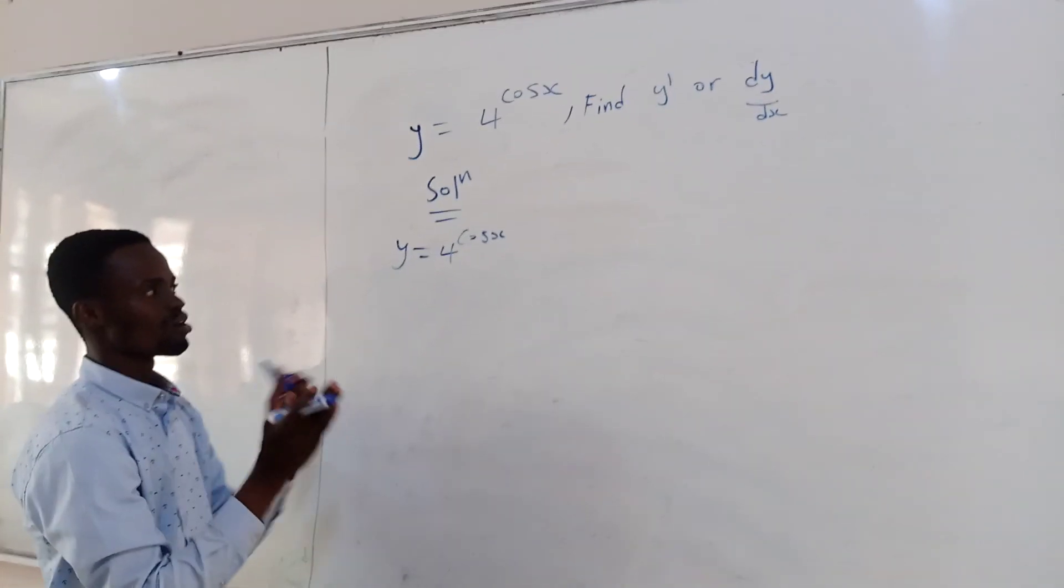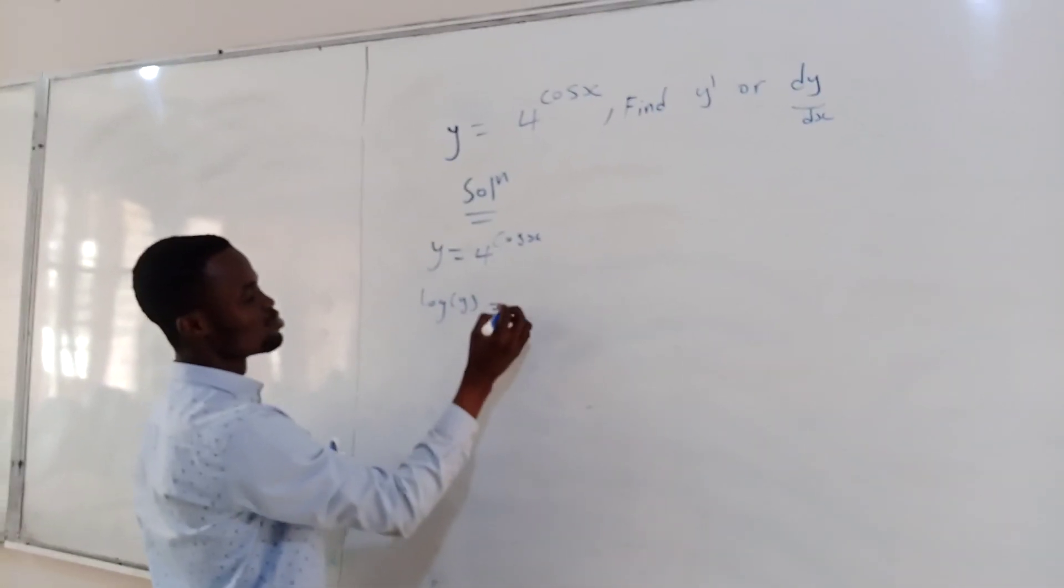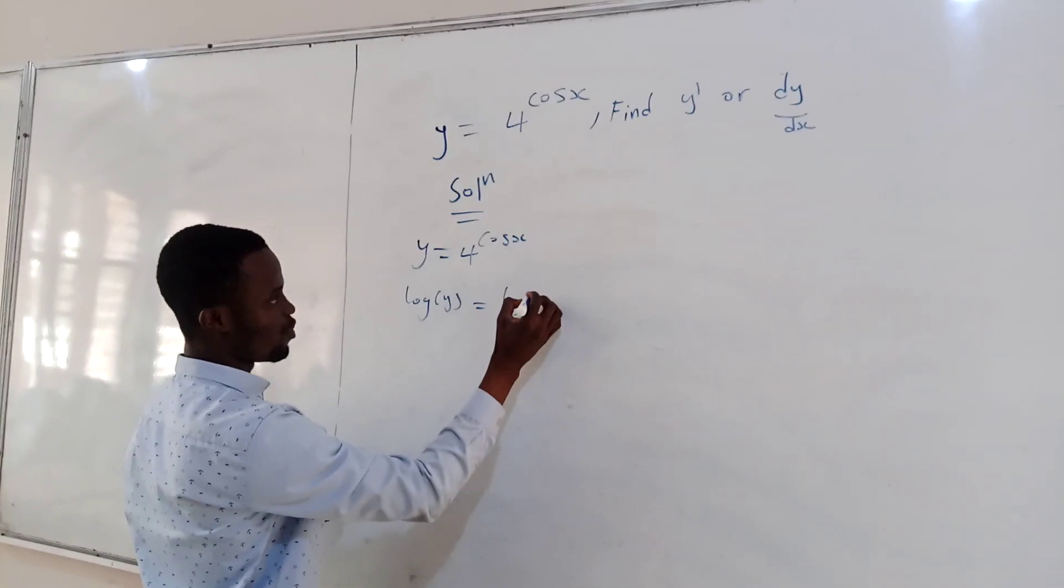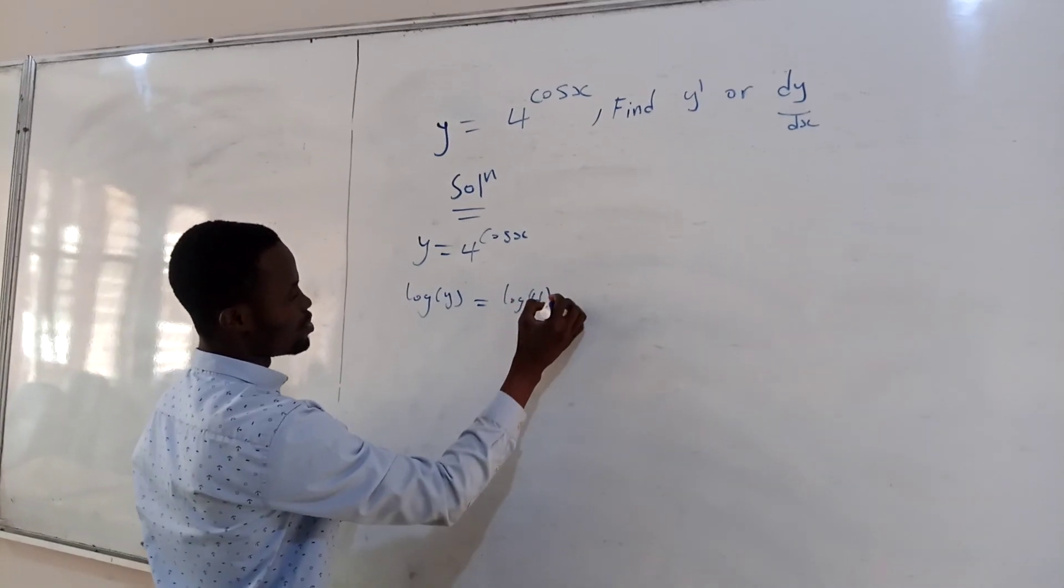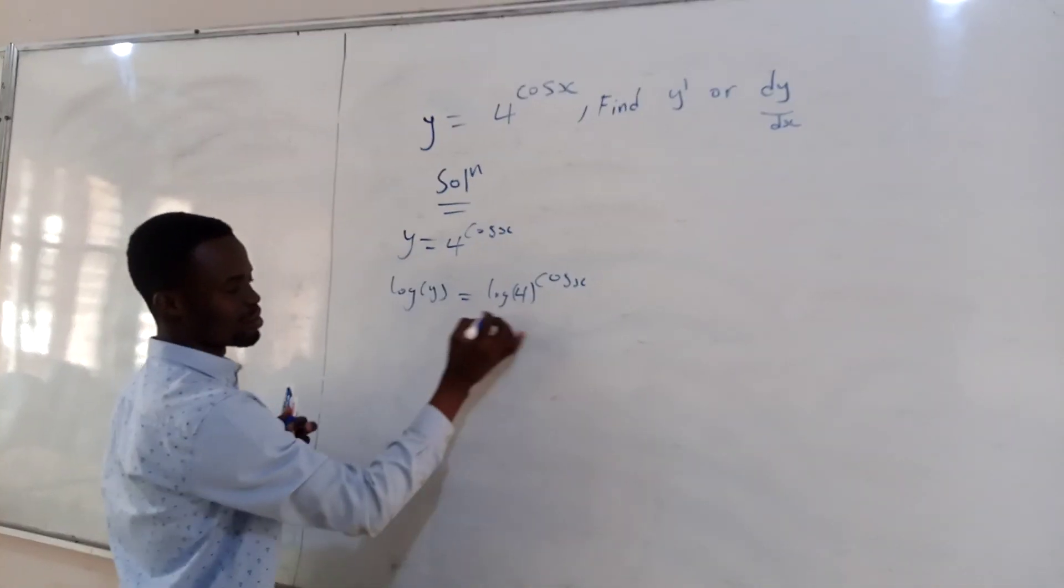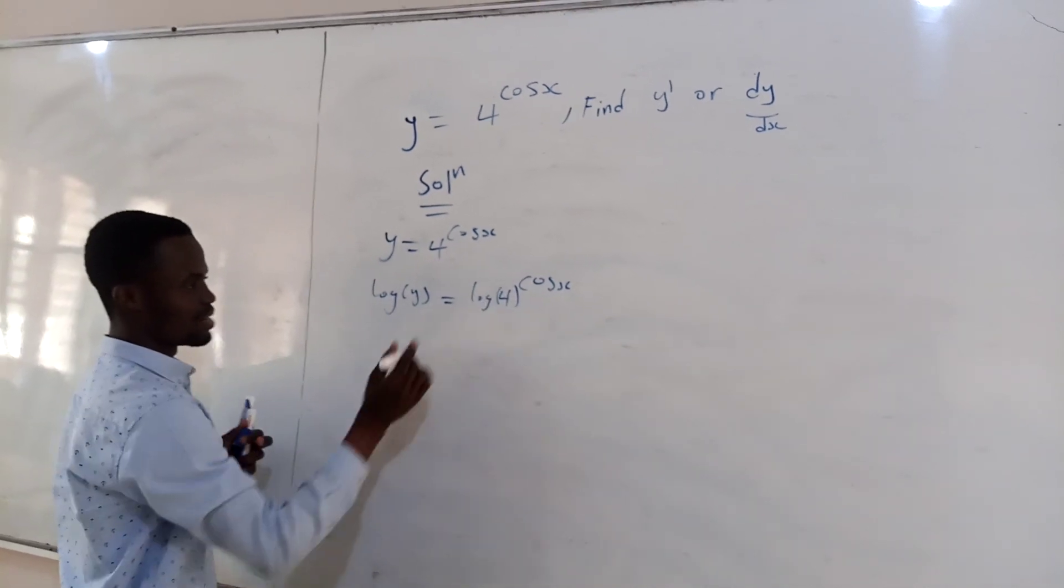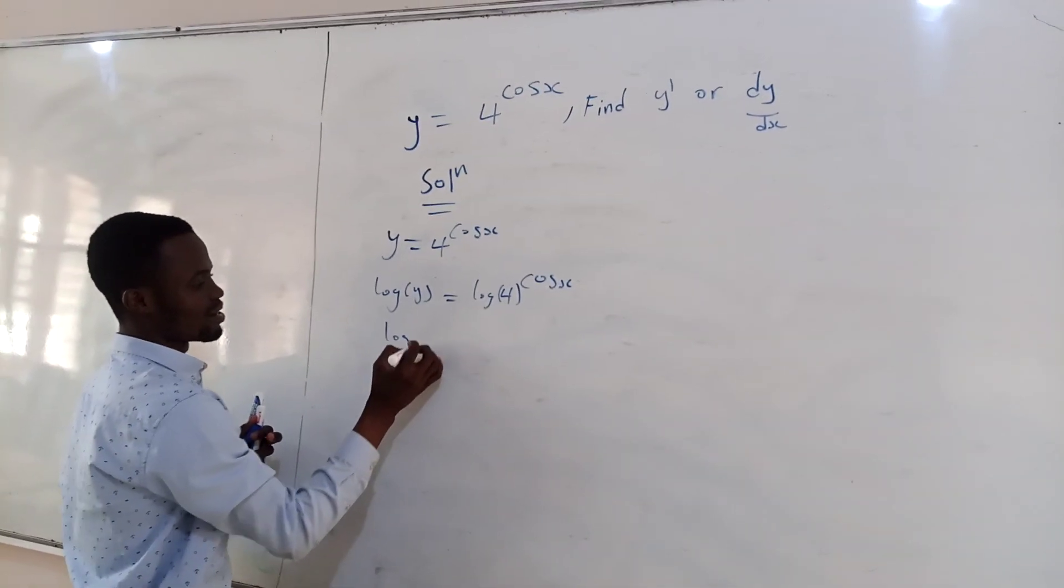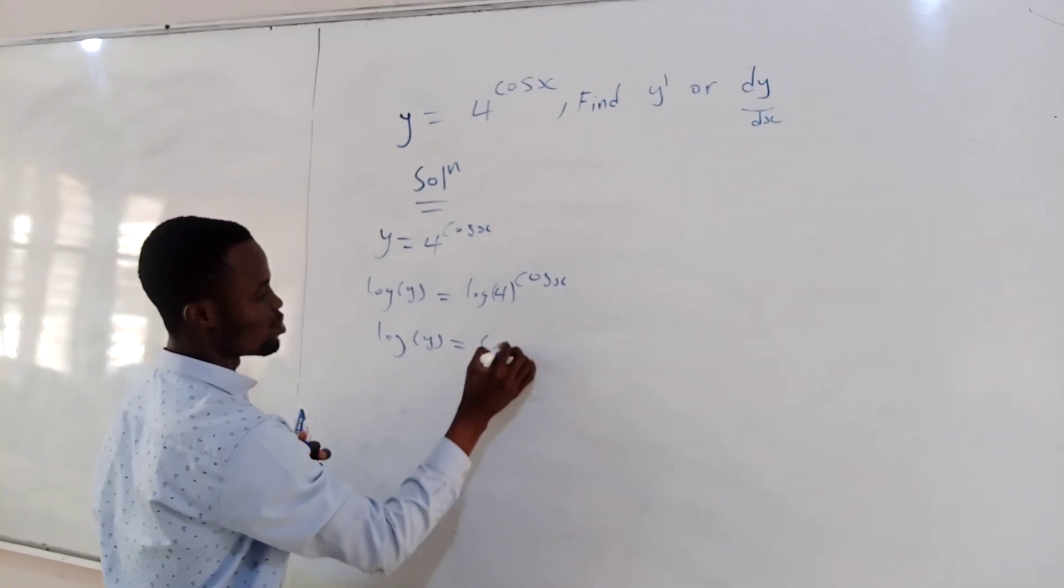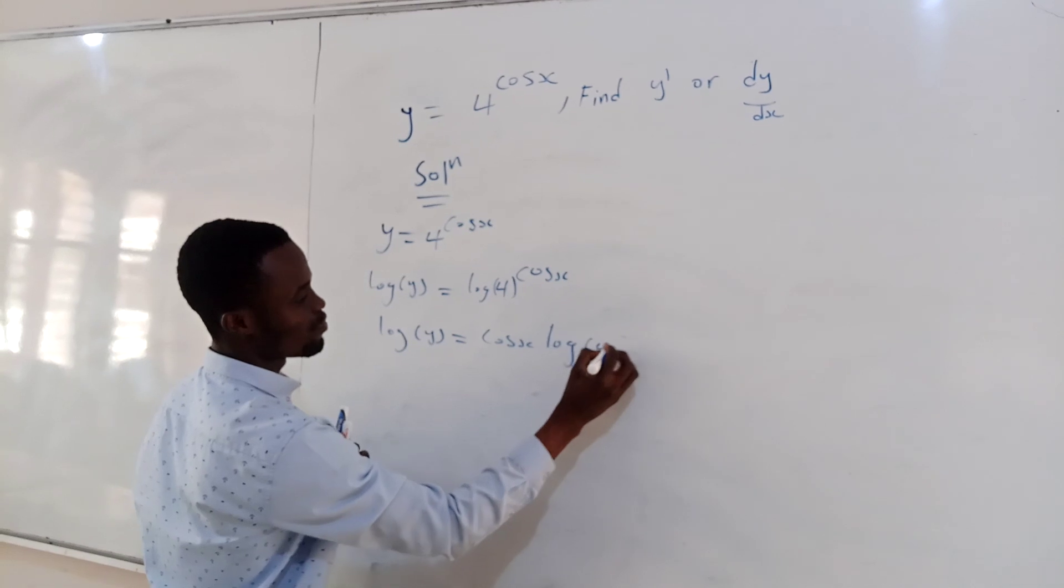You are going to get y equal to 4 raised to the power of cos x. So to find this, you want to take log on both sides. So you are going to get log y equal to log 4 raised to the power of cos x. From the property of log, you can bring the cos in the max. So you are going to get log y equal to cos x, then log 4.